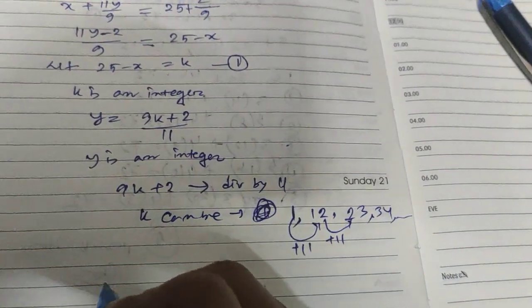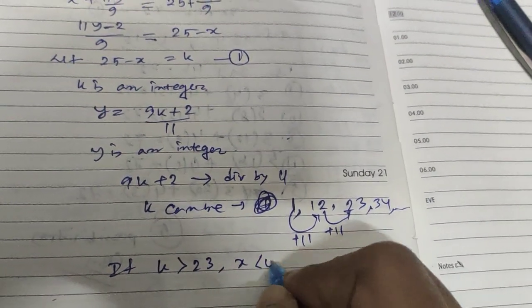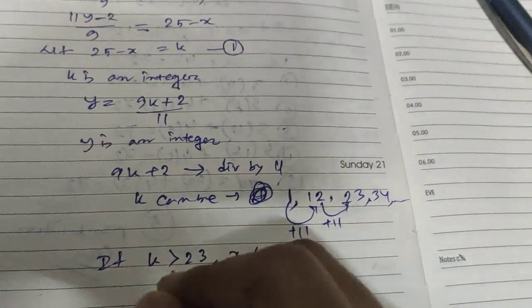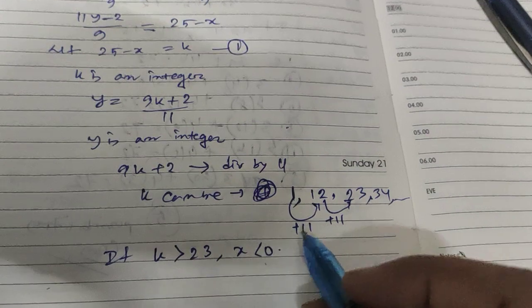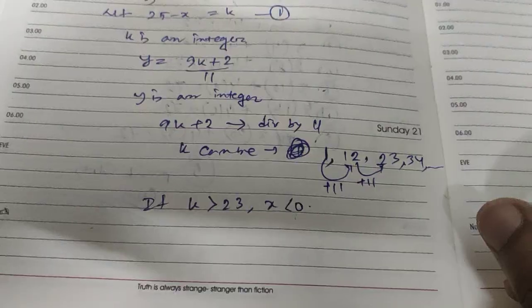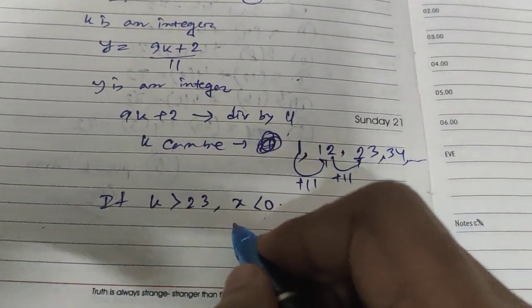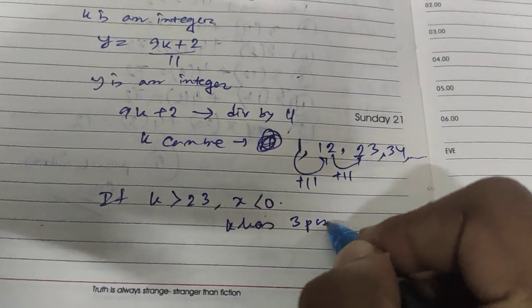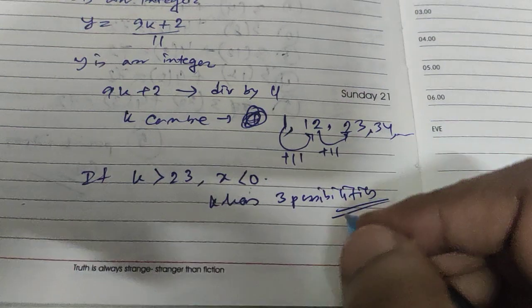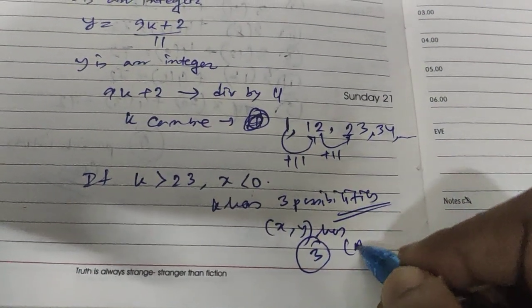So if K greater than 23 then X less than 0. For that case, you can see that when K is greater than 23 and X is less than 0, for this condition K has 3 possibilities. So X, Y has 3 possibilities. So 3 is your answer here.